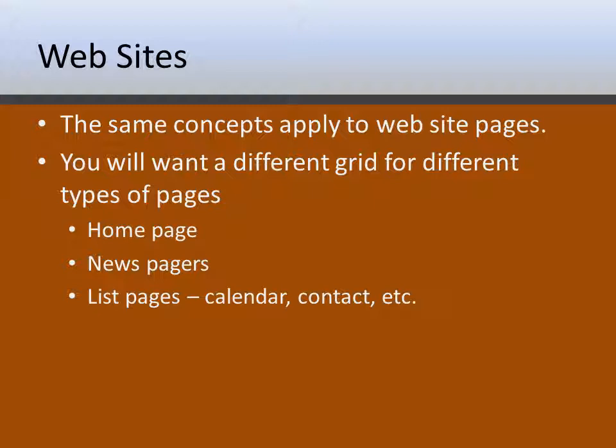Now, everything we've talked about so far has been about print, but all of these same principles apply to websites. Even though the medium has changed and the page tends to be wider rather than narrow like paper, you still can use a grid, you can still do columns, you still need a nameplate or title for your page. You still need to know where things go, and having a layout grid helps you place things when you're creating new pages. In a website, you're going to want to have different kinds of layout grids, and you don't need a lot.